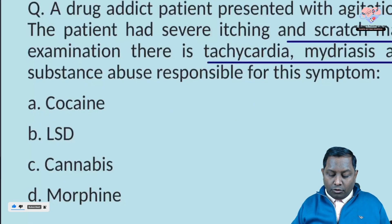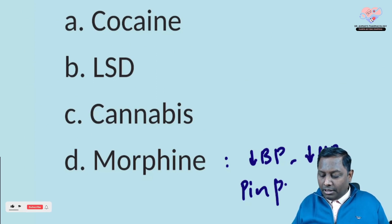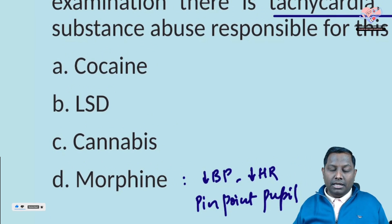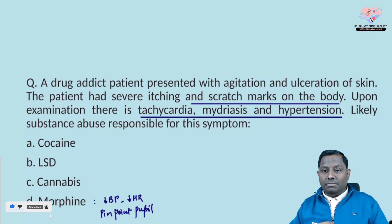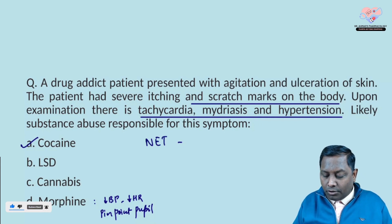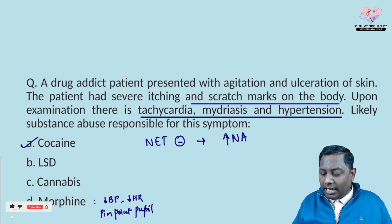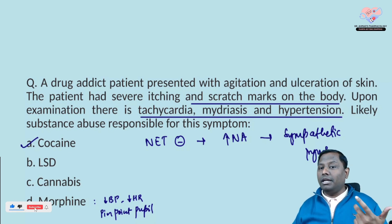Most of you might mark morphine, but remember — morphine at high doses decreases blood pressure, decreases heart rate, and causes pinpoint pupils, so morphine is the least likely. The correct answer is cocaine. You may have heard of 'cocaine bugs,' which cause the scratch marks seen here. Cocaine is a norepinephrine transporter inhibitor that increases norepinephrine levels, producing sympathetic symptoms: increased blood pressure, tachycardia, and mydriasis.